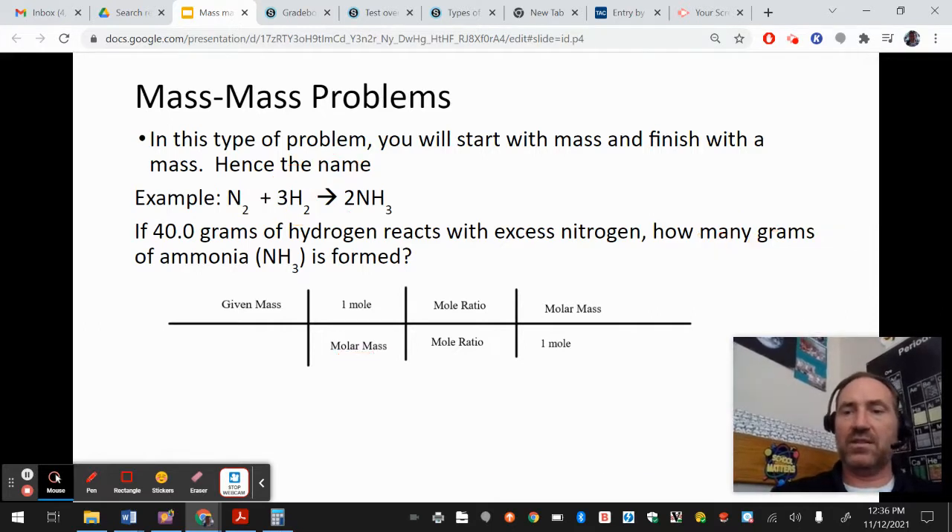And so one mole of NH3 and then 17 grams. So I'm going to take my calculator out. So 40 times two times 17 divided by six and I get - we'll do sig figs even too - 1,450 grams, or 1.45 times 10 to the third grams of ammonia is produced. So that's a mass-mass problem.